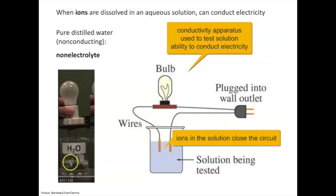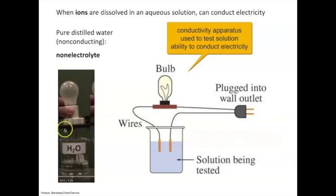If the solution has ions in it, it will literally close the circuit because the ions will connect the two electrodes, cause a bridge to connect those two electrodes, and that closes the circuit and lights up the light bulb.